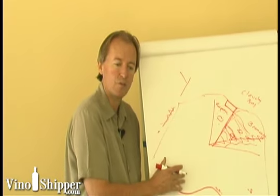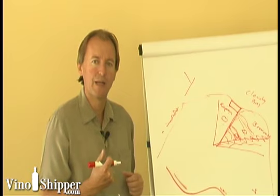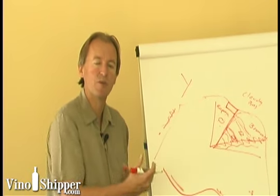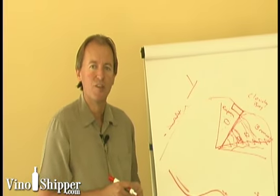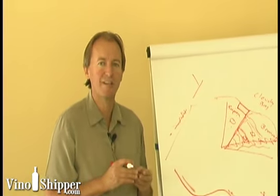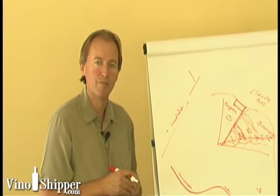So in McLaren Vale, and we produce a Forefathers Shiraz from McLaren Vale, you get a lot more black pepper and spice. Whereas in the Barossa, you'll get more of the white pepper. And that's the unique difference between those two appellations. So hopefully that gives you a little feel for Chile and Argentina, Marlborough region in New Zealand, and a little bit about McLaren Vale versus Barossa.